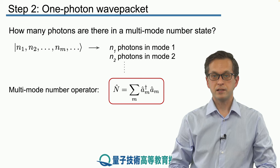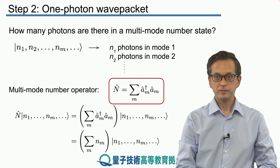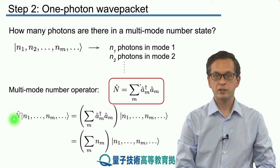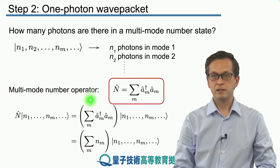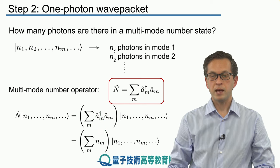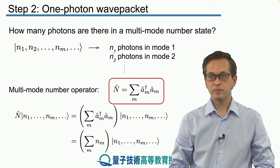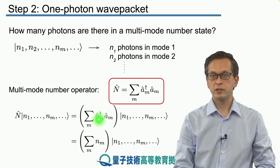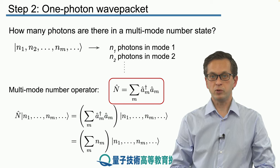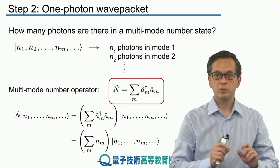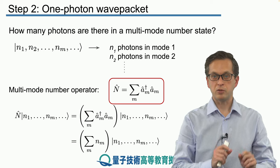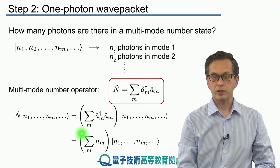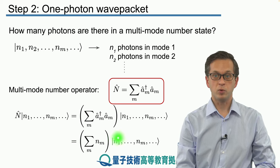Let's test that this works. We apply our multimode number operator to the multimode number state, written as the sum of A_M-dagger A_M — the number operator for individual mode M. Every one of these individual mode operators acts only on its corresponding mode. Therefore, it pulls out that particular N_M, giving us the following sum, which is exactly what we were looking for.